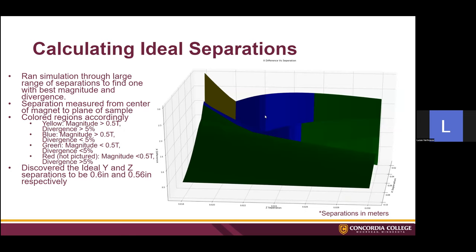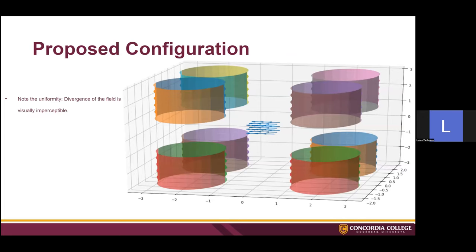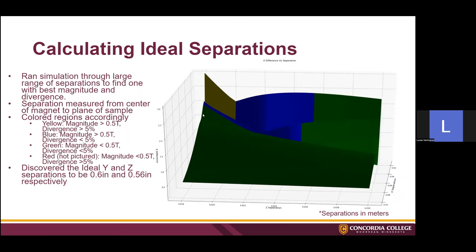Once I found this ideal configuration, I needed to find how far apart the magnets should be both vertically and horizontally — horizontally being the y-axis, vertically being the z-axis. I had to account for material between the magnets since they'll be housed in something, and then I swept through a large number of configurations with different values for y-separation and z-separation until I finally settled upon one in the yellow region of the graph.